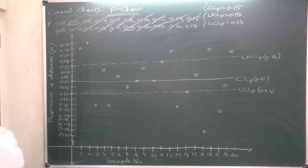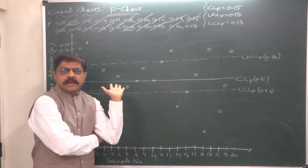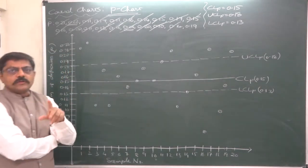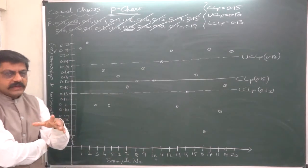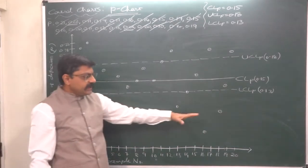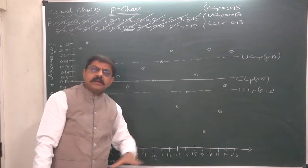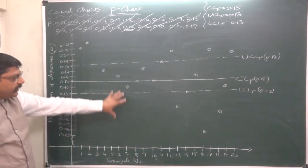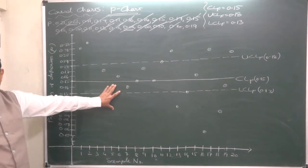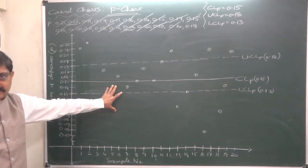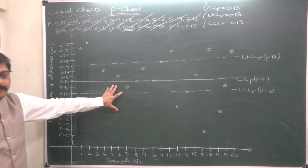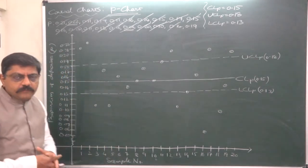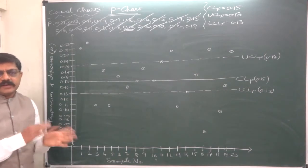This part — drawing or constructing the control chart — is similar in the case of all control charts: X-bar chart, R chart, P chart, NP chart, and all others. The part before the chart, up to the calculation of control limits, is always different for each chart type.